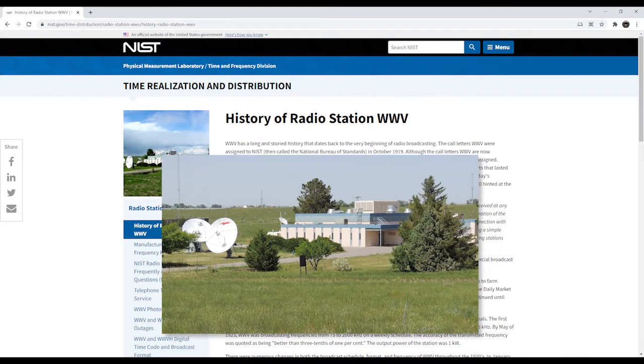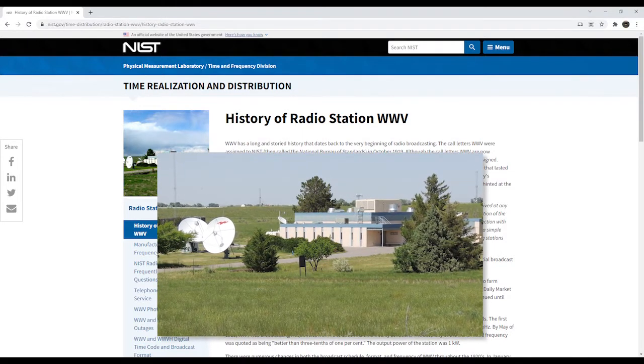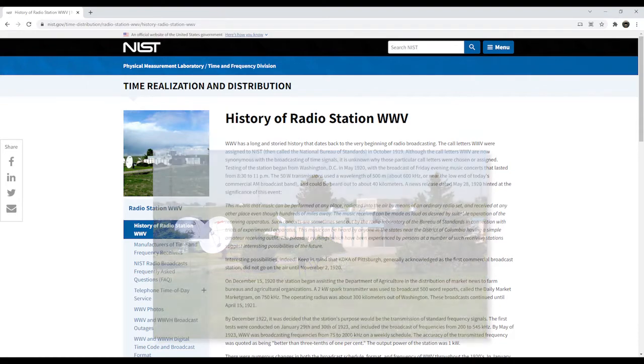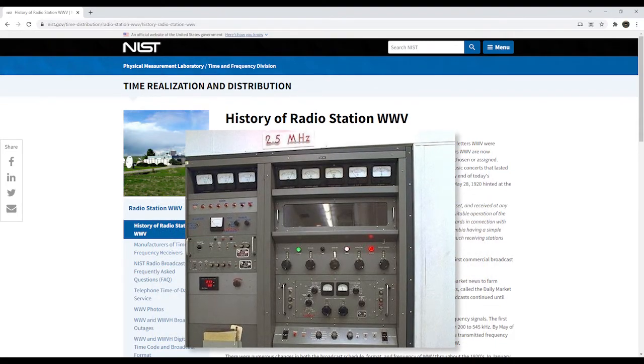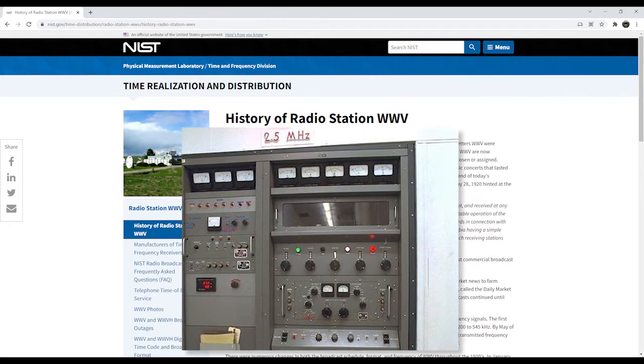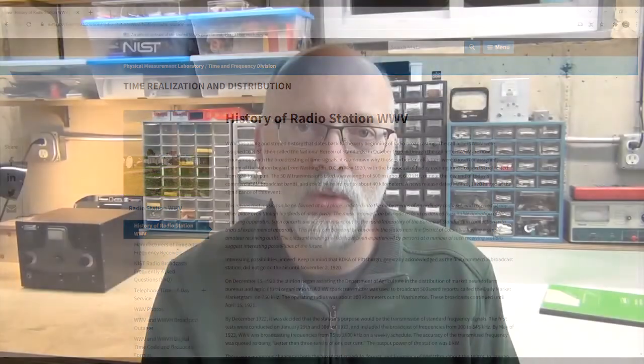WWV broadcasts from Fort Collins, Colorado on six different radio frequencies, and you can easily hear the signal with any radio that can tune to one of those frequencies. In its most basic application, you can listen to the audio tones and set the time on your clocks in your house. In fact, I can remember my dad doing that when I was a kid periodically just to keep us all on correct time.